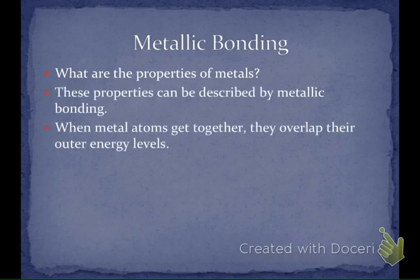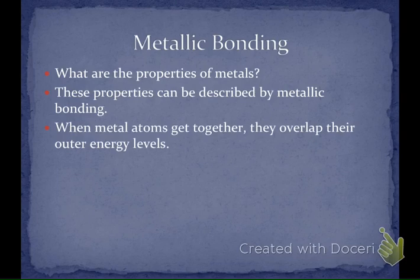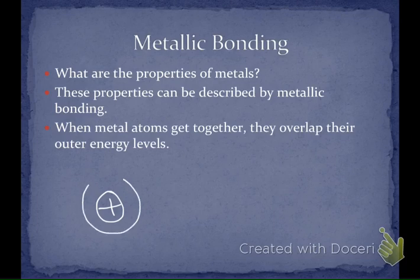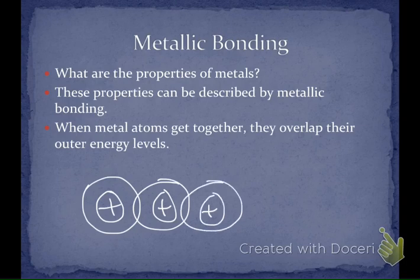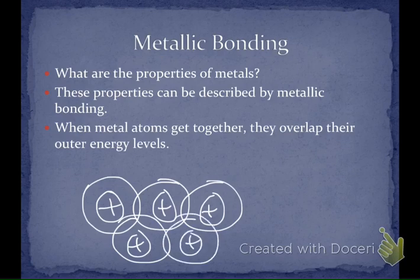When metal atoms get together, they have a tendency to overlap their outermost energy levels. Metals have large atomic radii and few valence electrons in that outermost energy level that are very loosely held. So the outermost energy level of a metal is almost empty. For example, sodium has one electron on its outermost energy level. A collection of sodium atoms can get close together and those outermost energy levels will overlap — similar to how orbitals overlap in a covalent bond to share electrons.